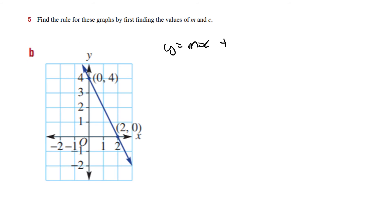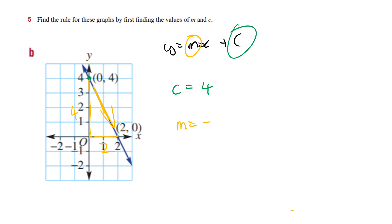Next graph: y equals mx plus c. The y-intercept is where it crosses — c equals 4. My rise is 4 and my run is 2. It's a negative gradient because the slope goes in that direction. So m is negative 4 over 2, which gives negative 2. My answer is y equals negative 2x plus 4.